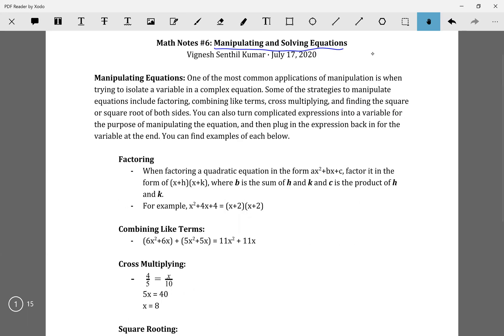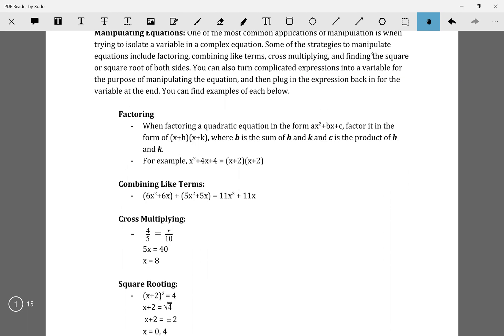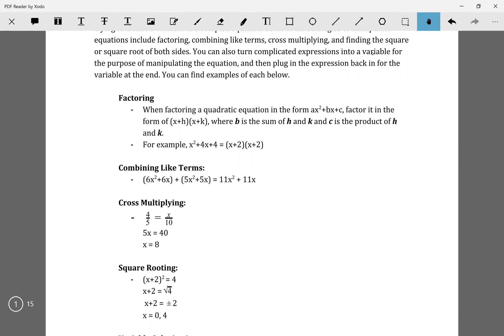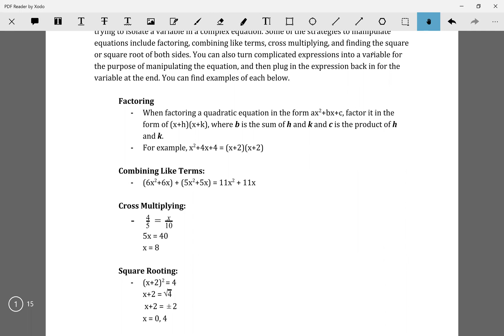I'm just going to go over each method, and usually when you have questions like this, you may have to use multiple of these methods, so you should always try to memorize all the methods you can use to solve an equation. So first off, we have factoring. When factoring a quadratic equation in the form of ax squared plus bx plus c, you factor it into (x+h)(x+k) where b is the sum of h and k, and c is the product of h and k. For example, x squared plus 4x plus 4 factors into (x+2)(x+2) because 2 plus 2 equals 4 and 2 times 2 equals 4.